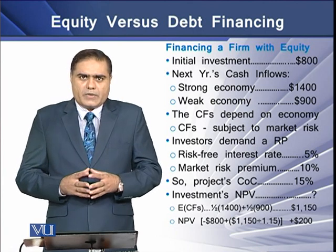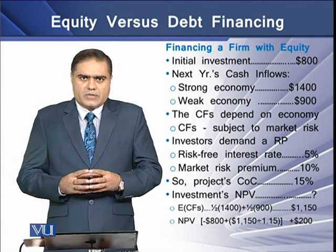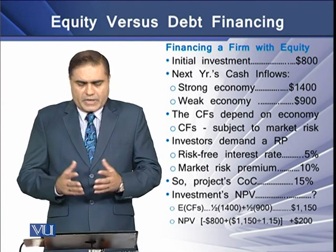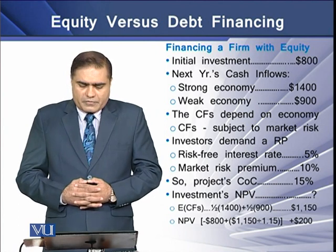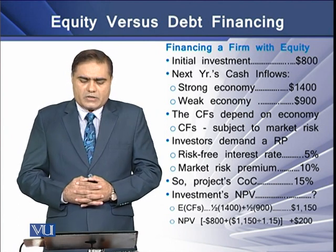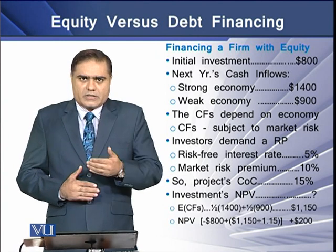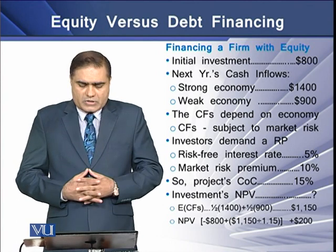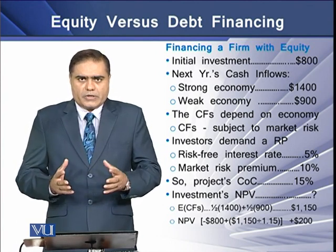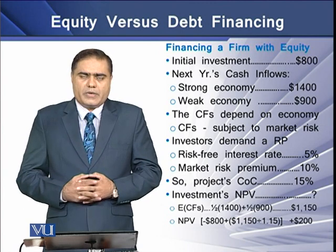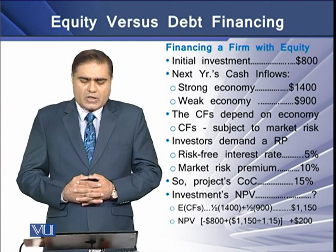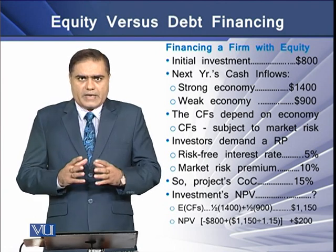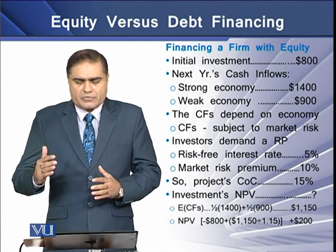What happens when a firm finances its business through the sole issue of equity? We have an example with an initial investment of $800, and it is estimated that next year's cash flows will be of two types. If the economy is strong, the cash flows would be $1,400, and if the economy is weak, the cash flows would be $900. These cash flows depend on the economy, meaning they are subject to some market risk.